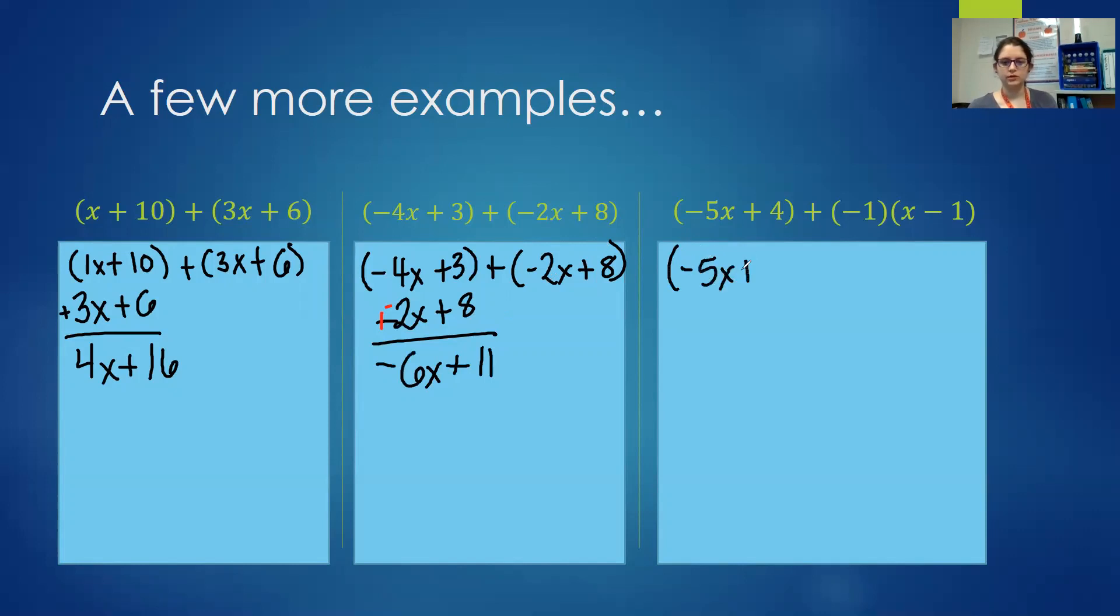We have negative 5x plus 4 plus negative 1 times x minus 1. There's a couple of things we have to do before we can get started. First we have to know that this x needs a coefficient when we don't have one. The coefficient is 1. And the second is we need to recognize that this is the distributive property and before we can combine things that are similar we do have to distribute.